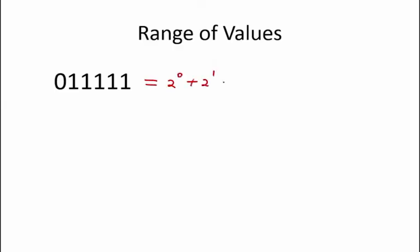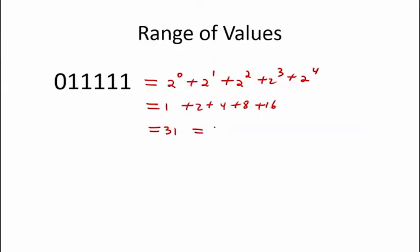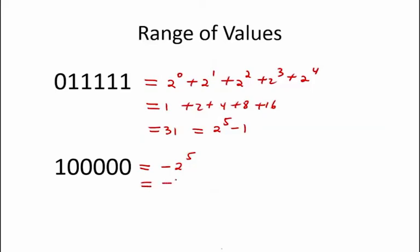Let's take a look at the range of numbers that can be represented using n-bit 2's complement. Let's begin with our example of 6 bits. The largest positive number in that case is 0 followed by five 1's, which is equal to 2 to the 0 plus 2 to the 1 plus 2 squared plus 2 cubed plus 2 to the 4th, which equals 1 plus 2 plus 4 plus 8 plus 16, which equals 31, also equal to 2 to the 5th minus 1. The most negative number using 6 bits is 1 followed by five 0's, which equals negative 2 to the 5th with no positive component, equal to negative 32. So in general, for n bits, the 2's complement number can range from negative 2 to the power n minus 1 through positive 2 to the power n minus 1, minus 1.